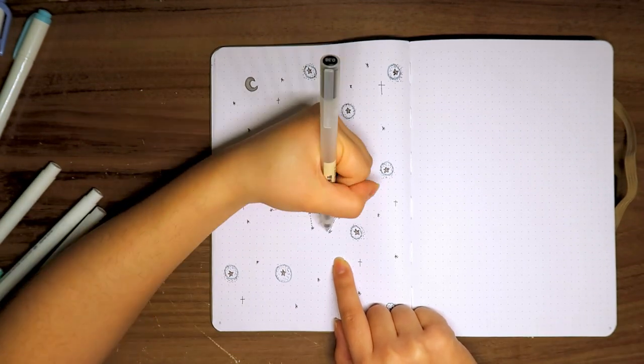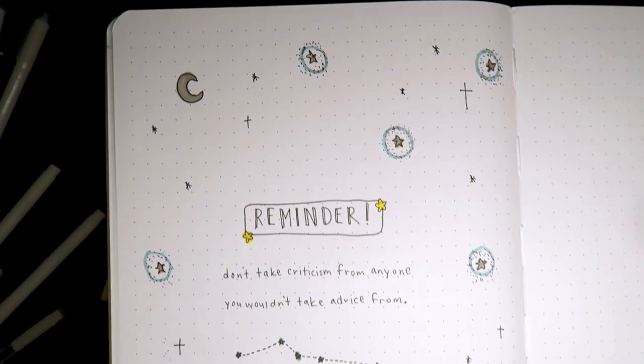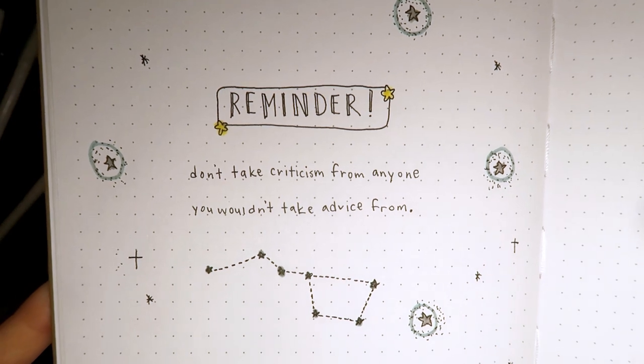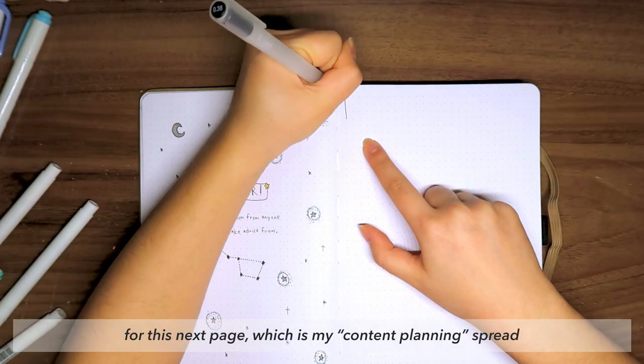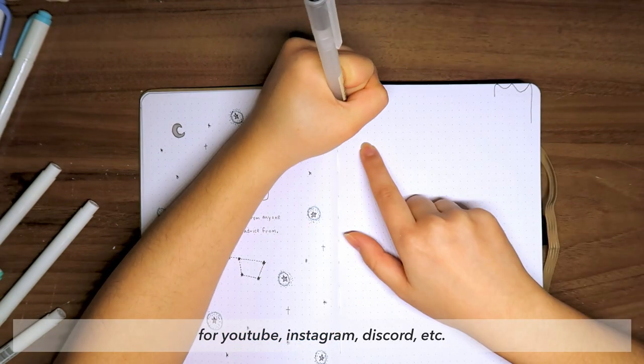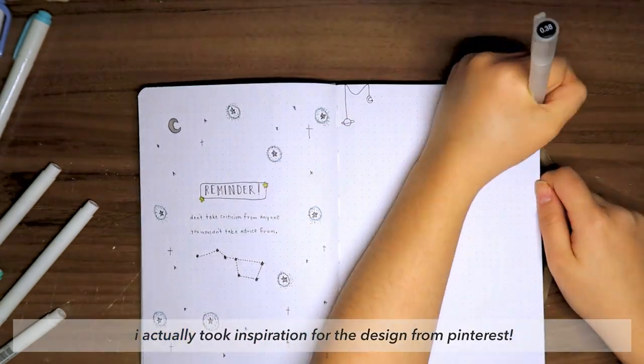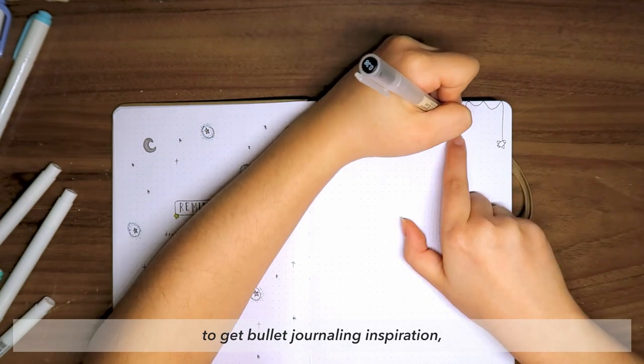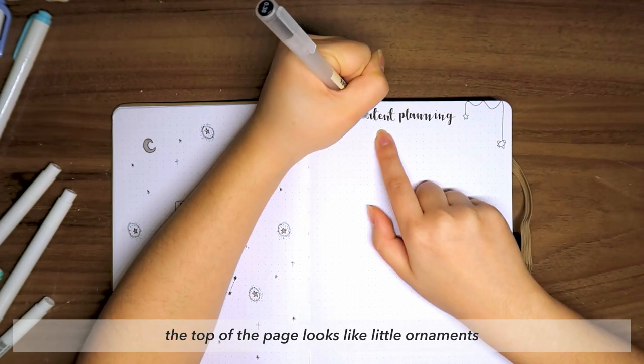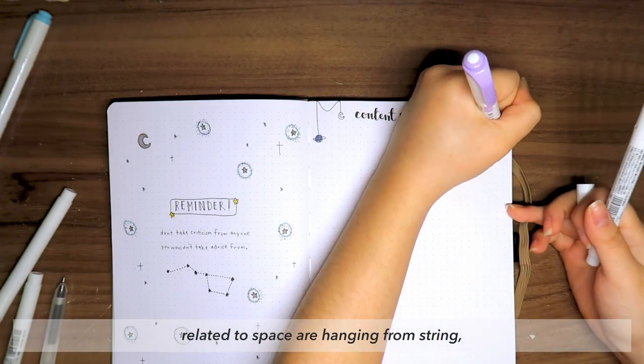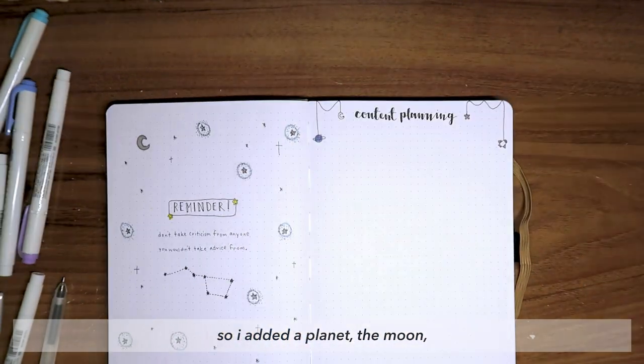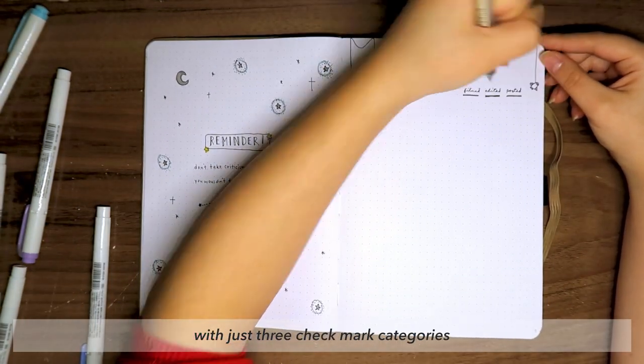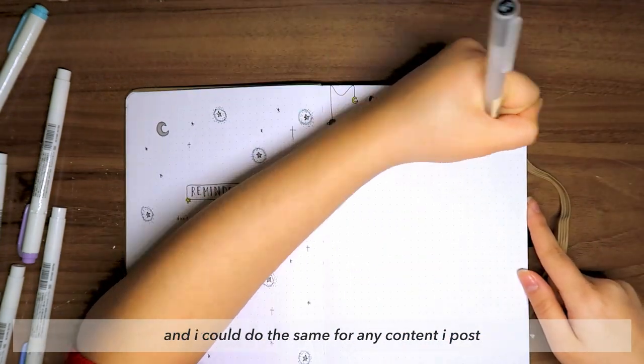For this next page, which is my content planning spread for YouTube, Instagram, Discord, etc., I actually took inspiration for the design from Pinterest. Pinterest is definitely one of the best places to get bullet journaling inspiration - I definitely recommend it. The top of the page looks like little ornaments related to space are hanging from string, so I added a planet, the moon, a star, and a rocket ship. I made this super simple too, with just three checkmark categories for when each video is filmed, edited, and posted. And I could do the same for any content I post on other sites.